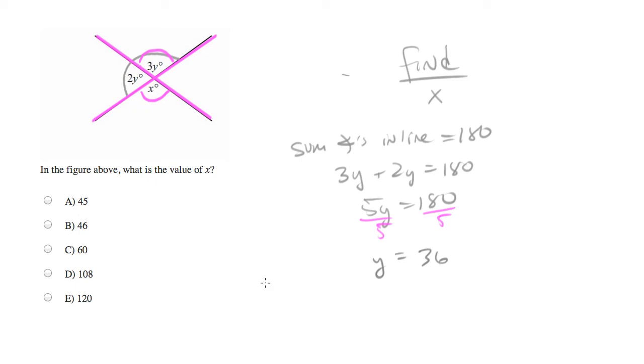So we know that 3Y is equal to X. And we have a value for Y, which is 36, which we can plug in. So we'll get 3 times 36 equals X.